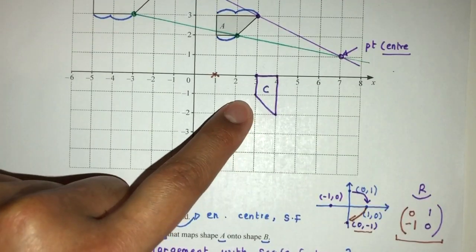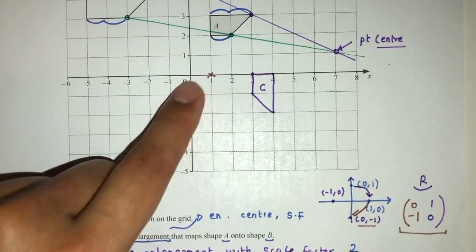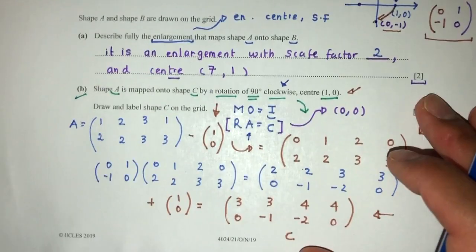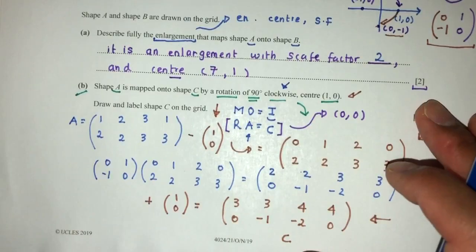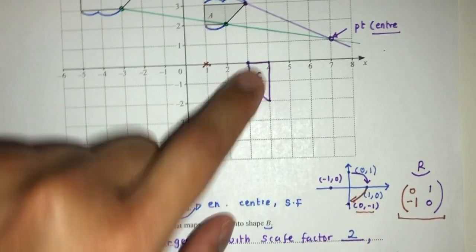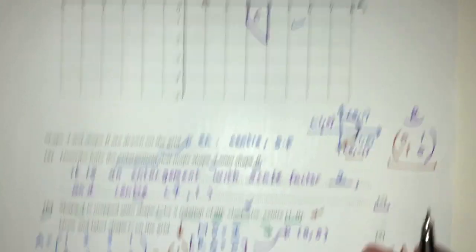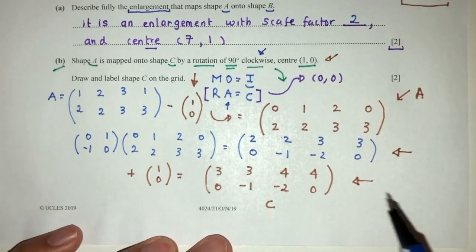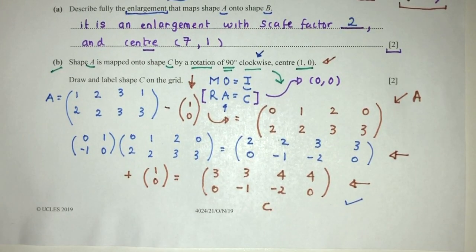Let's verify on the diagram. The coordinates (3,0), (3,−1), (4,−2), and (4,0) all match the positions we plotted earlier through observation. We've confirmed the answer through calculation. That completes part B of the question.